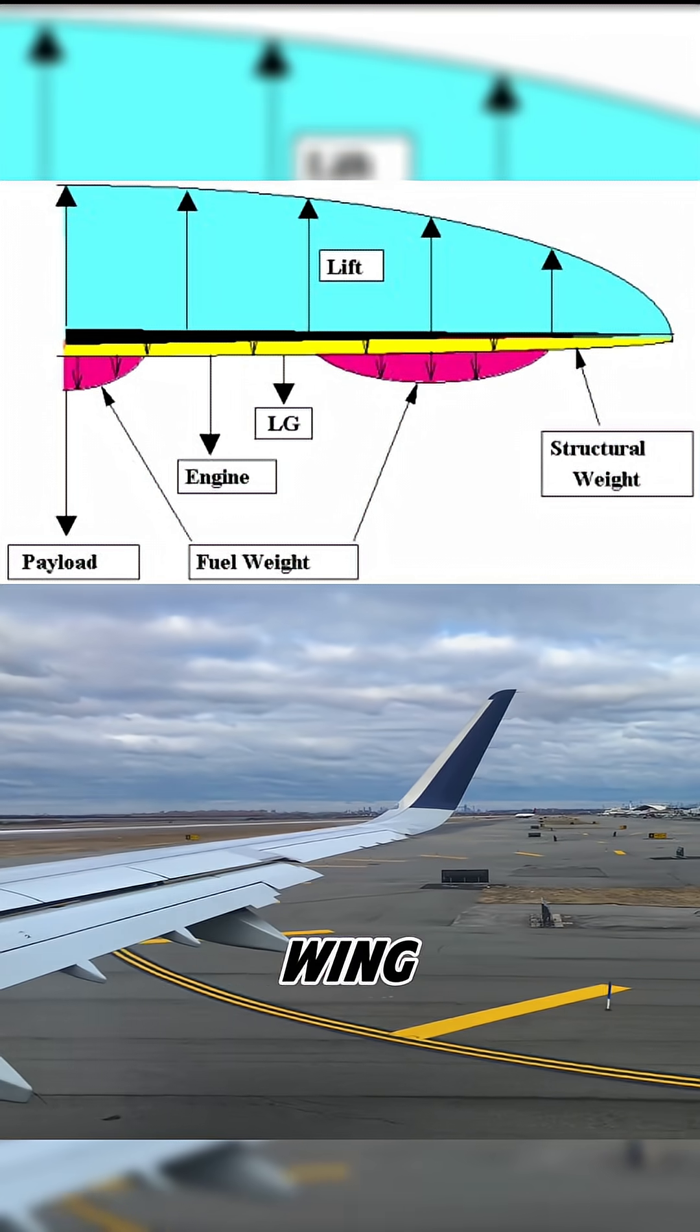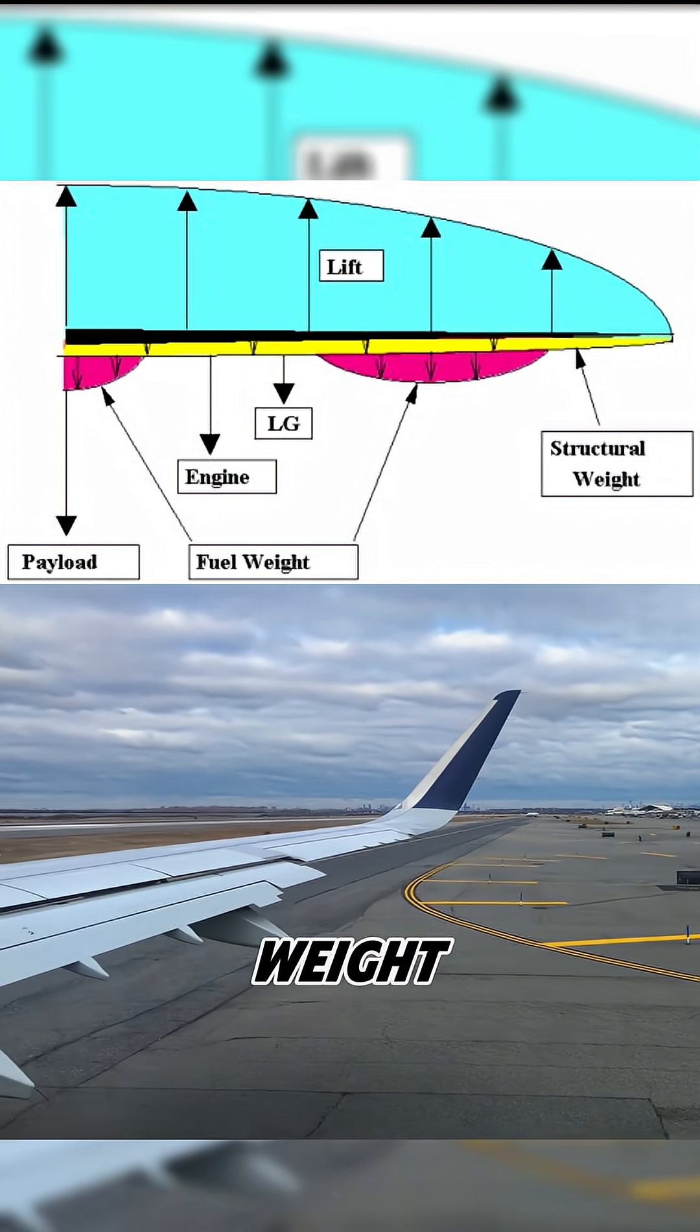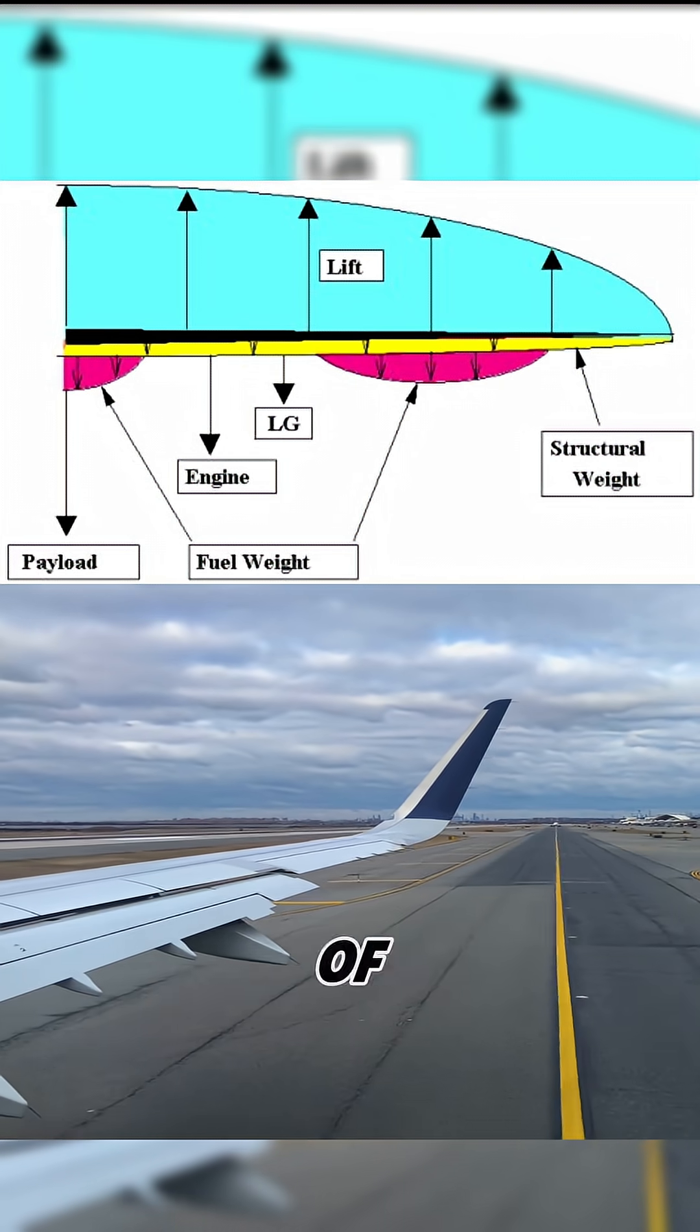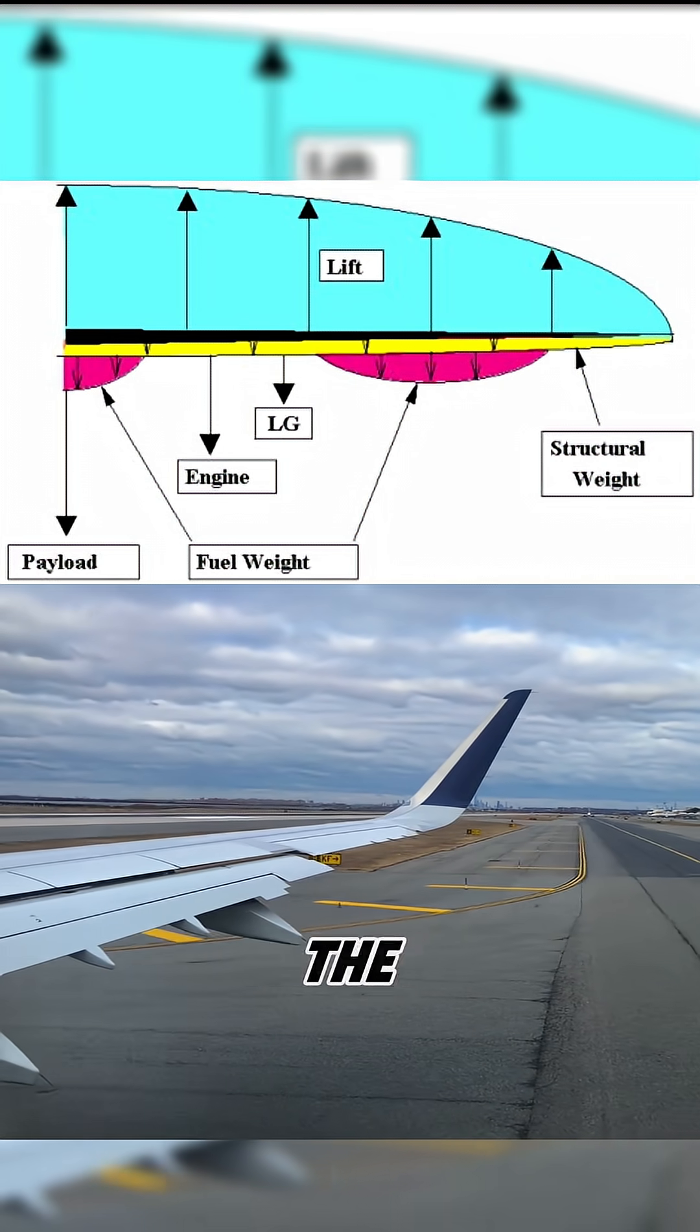Think of an airplane wing. The fuel, passengers, and structure all add weight across the span. This connects directly to wing loading, which is the total weight of the aircraft divided by the wing's area.